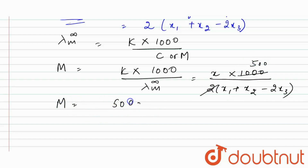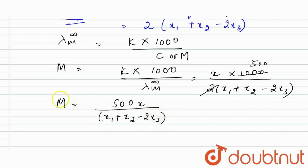After simplification, molarity m equals 500x divided by (x1 + x2 − 2x3). Now we can substitute the value of m into the solubility product expression.